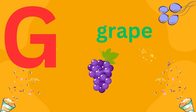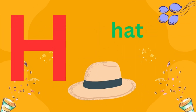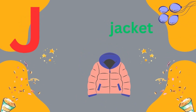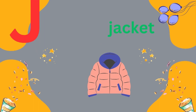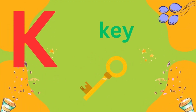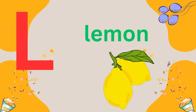Z is for grapes. Z is for hat. Y is for island. Z is for jacket. K is for pea. Z is for lemon.